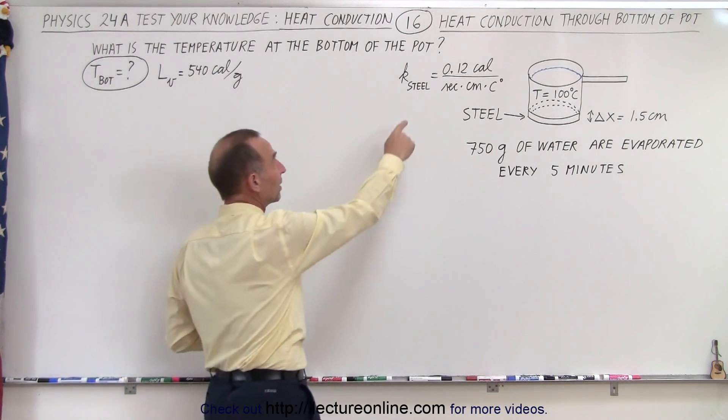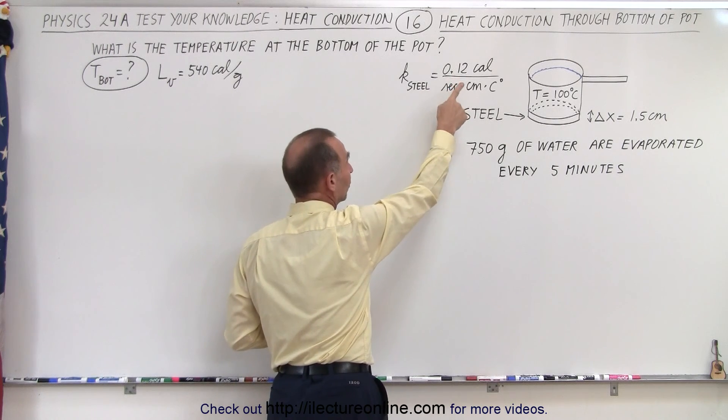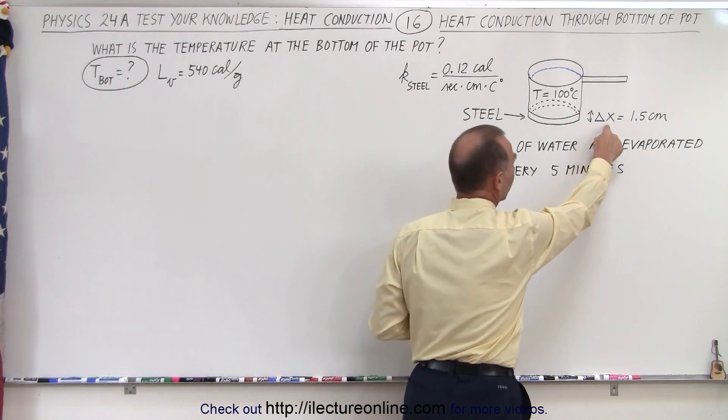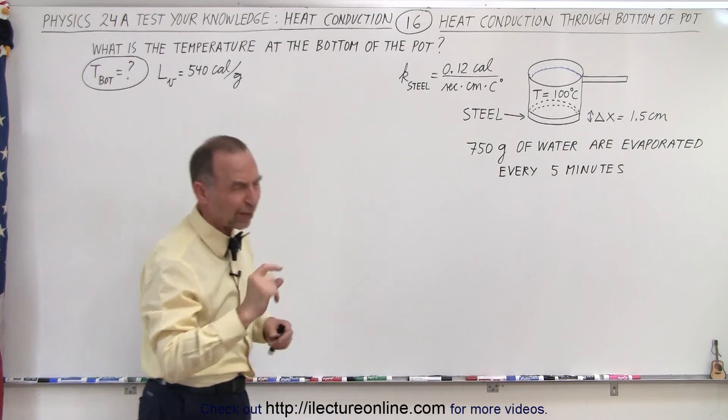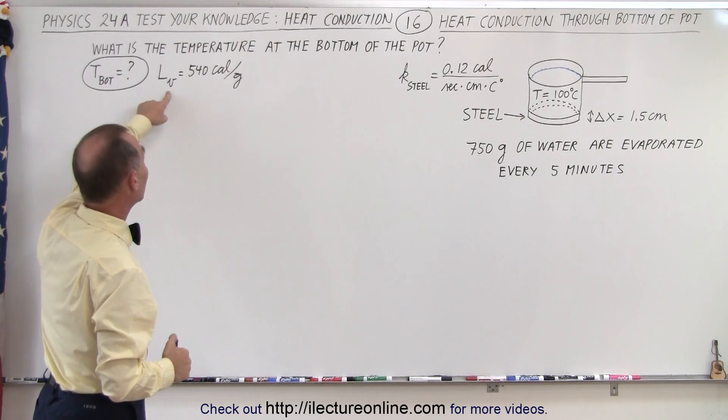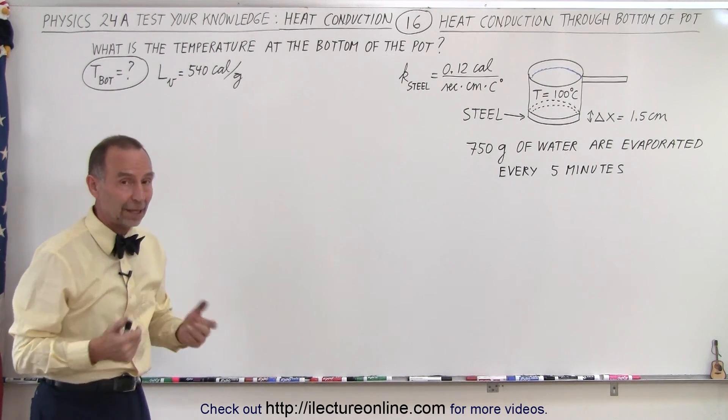We're given the heat conductivity of steel in terms of calories per second, per centimeter, per centigrade degree. Notice that the thickness of the bottom of the pot is one and a half centimeters. That's quite thick for a pot. And notice that the latent heat of vaporization for water is 540 calories per gram.